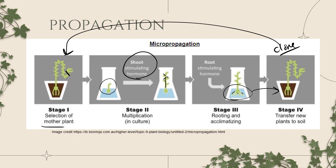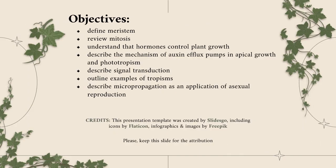Let's wrap up. We defined meristem — the stem cells of plants. We talked about mitosis, PMAT, how the nucleus of eukaryotic cells divides. We talked about how hormones control plant growth, with a big focus on auxins and those efflux pumps that move auxin to the shady side in phototropism. We also covered gravitropism, thigmotropism, and how auxins work via signal transduction with amplification of the signal and gene expression. We wrapped up with a look at micropropagation — making plant cuttings to asexually clone plants.